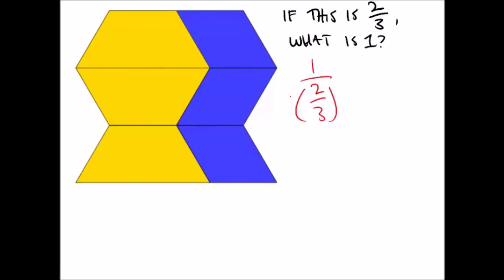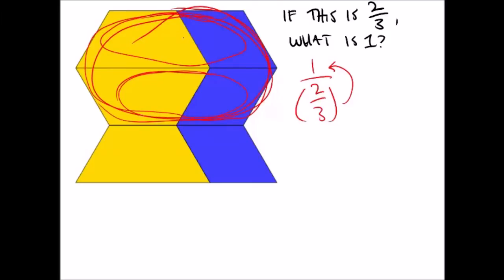That is asking, how many copies of two-thirds are in one? Well, we just realized that this is two-thirds, but we also saw that two-thirds is made up of halves. And so if I want to know how many two-thirds there are in one, well, there's one and a half.